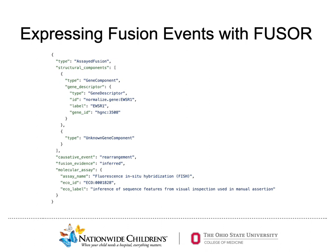Here is an example of an EWSR1 assay fusion with an unknown partner represented using the Fuser class. In describing fusion partners, Fuser resolves ambiguous gene aliases through normalization and records other relevant metadata, such as the cause of event and information regarding the molecular assay, that provide important context needed for accurate clinical interpretation. Fuser objects can be created by supplying the relevant data to classes within the wider Fuser class.